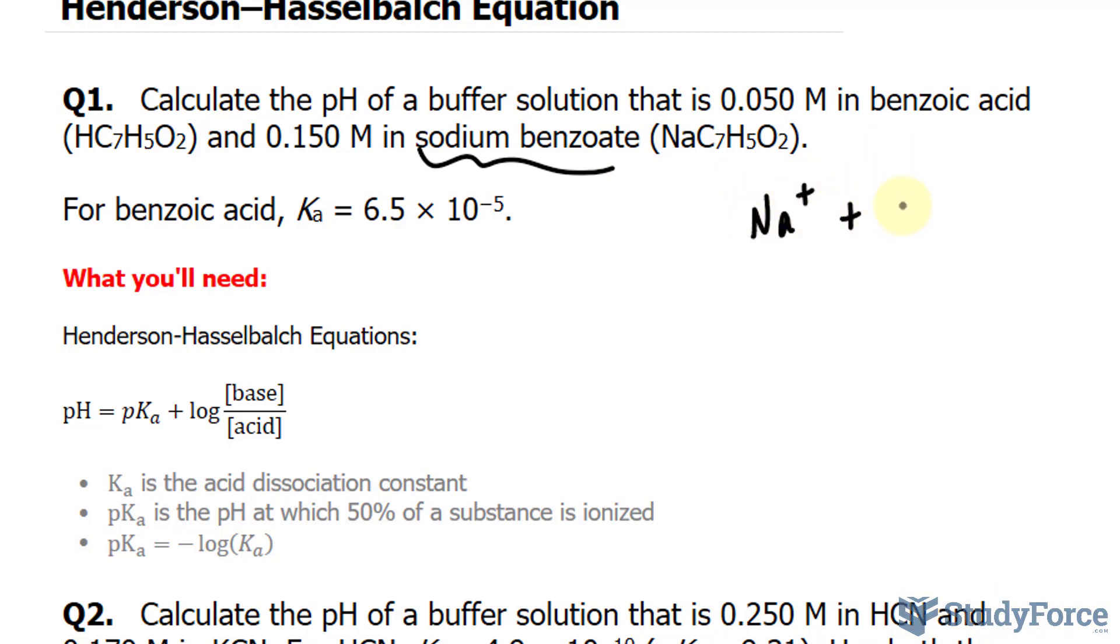C7H5O2 minus. This anion acts as the conjugate base, given that it is derived from this precursor molecule.